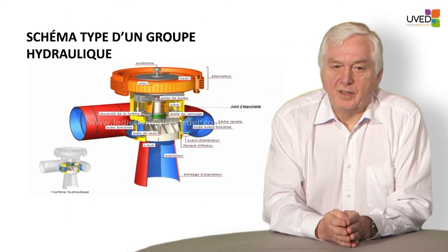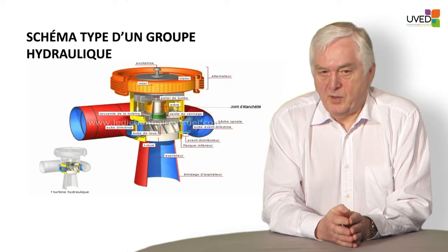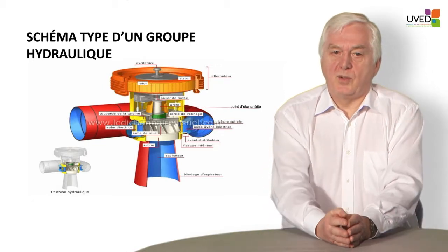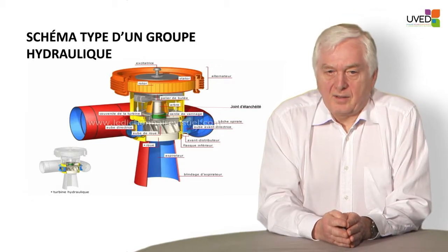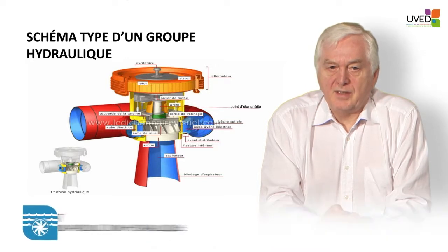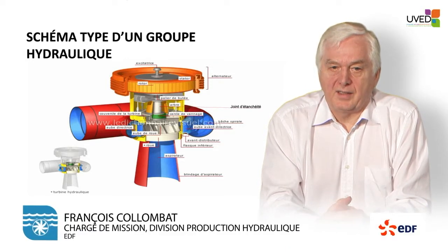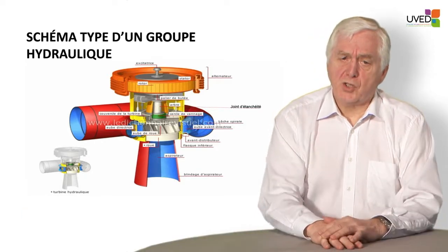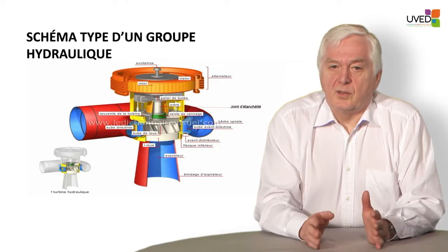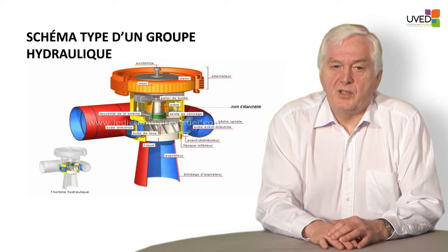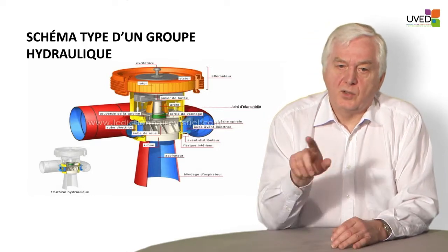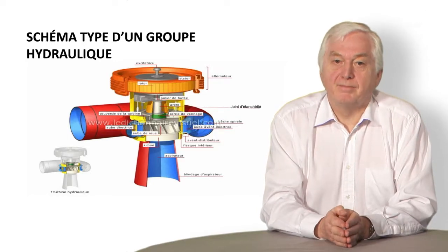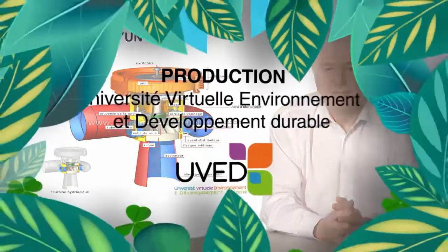Here we see the cross-section of a hydraulic power plant generator. This is a Francis turbine. We see the intake pipe around the turbine, as well as the shaft which drives the alternator and the alternator rotor. The alternator produces a magnetic field which excites the stator. We can see the water coming in from the left-hand side, going around the turbine and then down into the suction system.